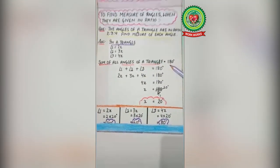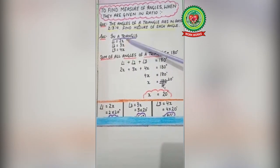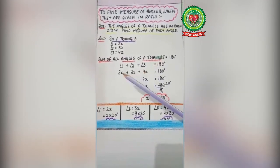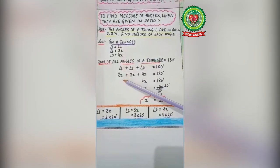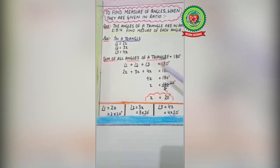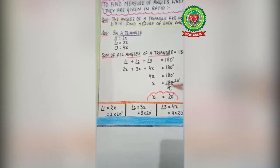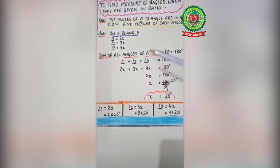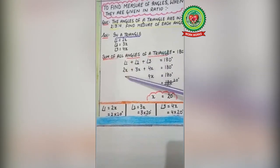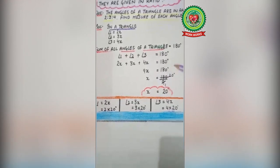Now write the property: sum of all angles of a triangle equals 180 degrees. A triangle has three angles, so write angle 1 + angle 2 + angle 3 = 180°. Substituting the values: 2x + 3x + 4x = 180°. Since 2x, 3x, and 4x are like terms — same variable — you add the coefficients: 2 + 3 = 5, and 5 + 4 = 9. So 9x = 180°.